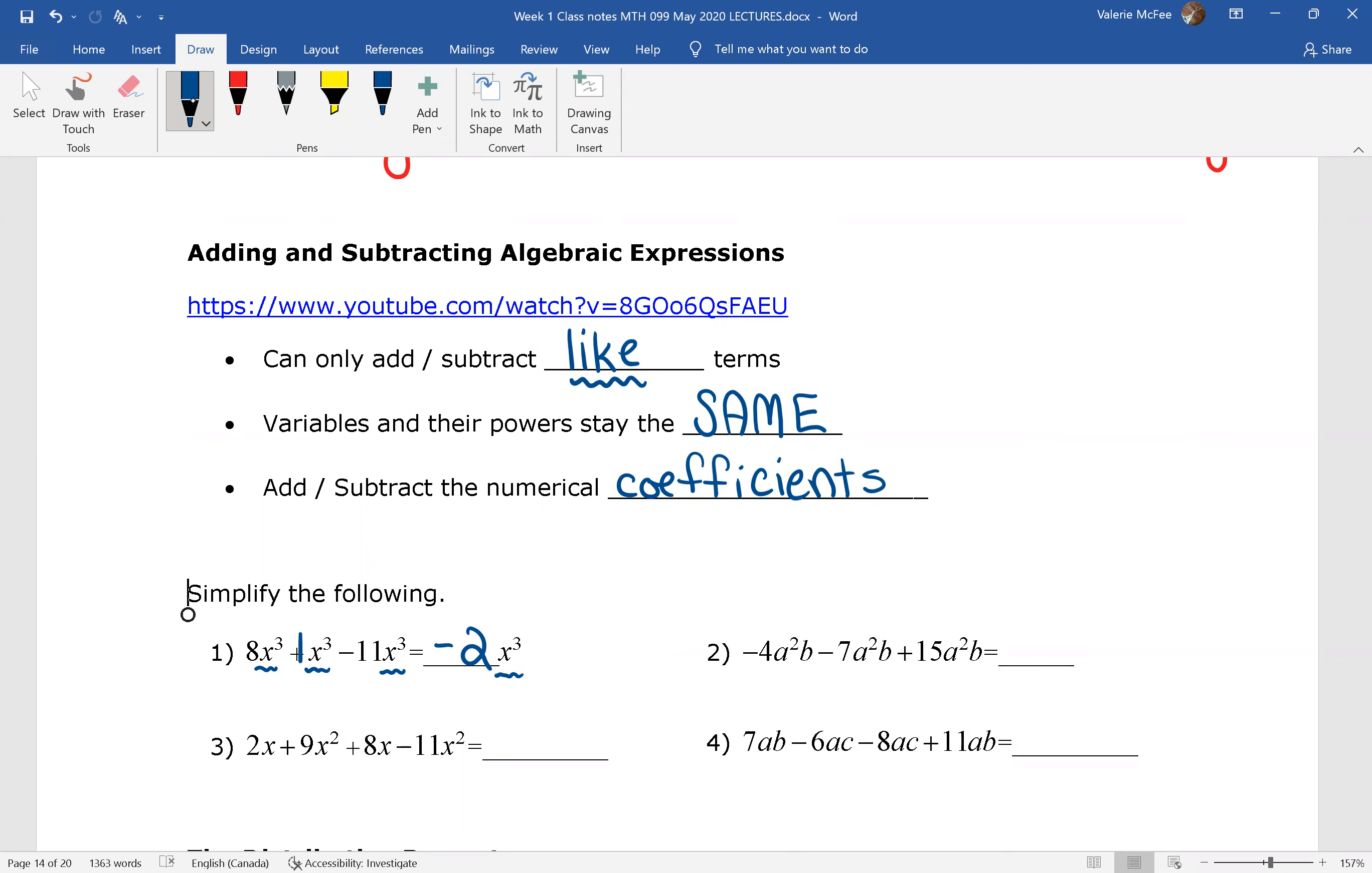Question two. These are all like terms. So we keep the like terms. And we add and subtract the coefficients. Negative four minus seven is negative 11, negative 11 plus 15, positive four. Now in question three, these are not all like terms. We have x squared in two of the terms, but x to the power of one in the other two. Remember, we only combine like terms. So first we can add 2x plus 8x. That's 10x. Remember the variable stays the same. So does its exponent. And then we have plus 9x squared minus 11x squared, negative 2x squared.